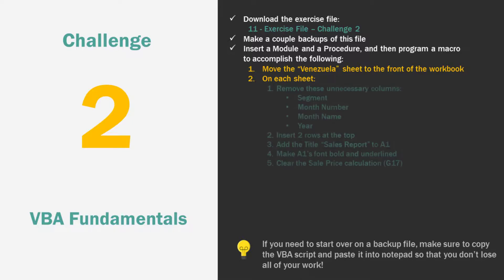On each one of these sheets, we're going to remove these unnecessary columns: the segment column, the month number, the month name, and the year. After that, we're going to add two rows to the top, add the title 'Sales Report' to A1, and make that title bold and underlined. And finally, on each one of these sheets, we're also going to clear that sale price calculation — it's totally meaningless, so we want to remove it.